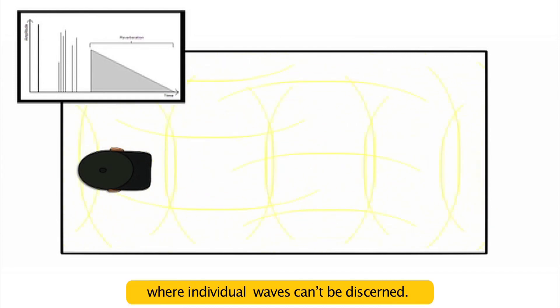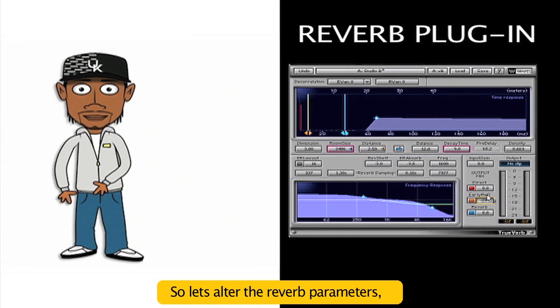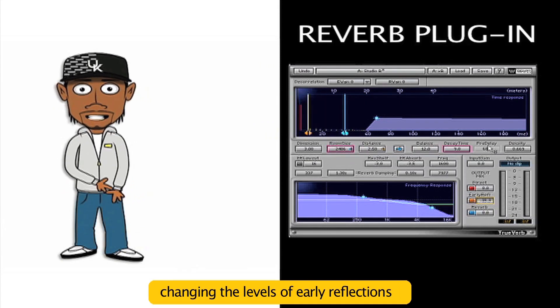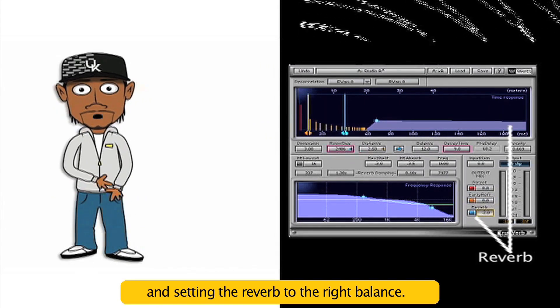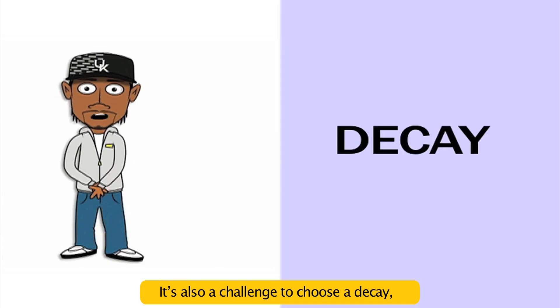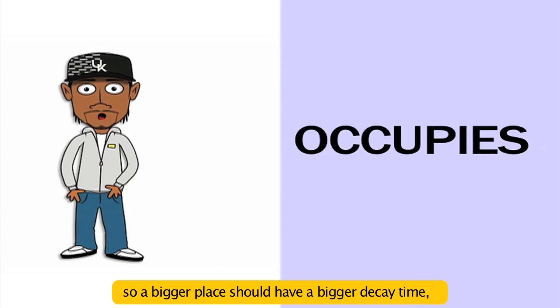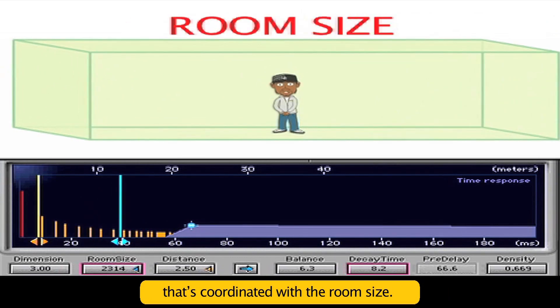So let's alter the reverb parameters for developing the right ambience—changing the levels of early reflections and setting the reverb to the right balance. It's also a challenge to choose a decay that matches the space it occupies. So a bigger place should have a bigger decay time that's coordinated with the room size.